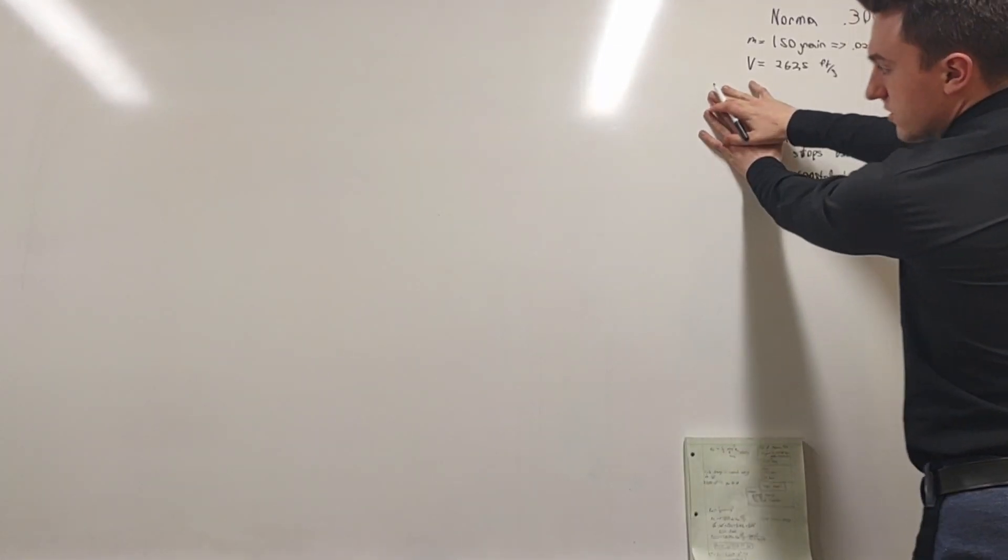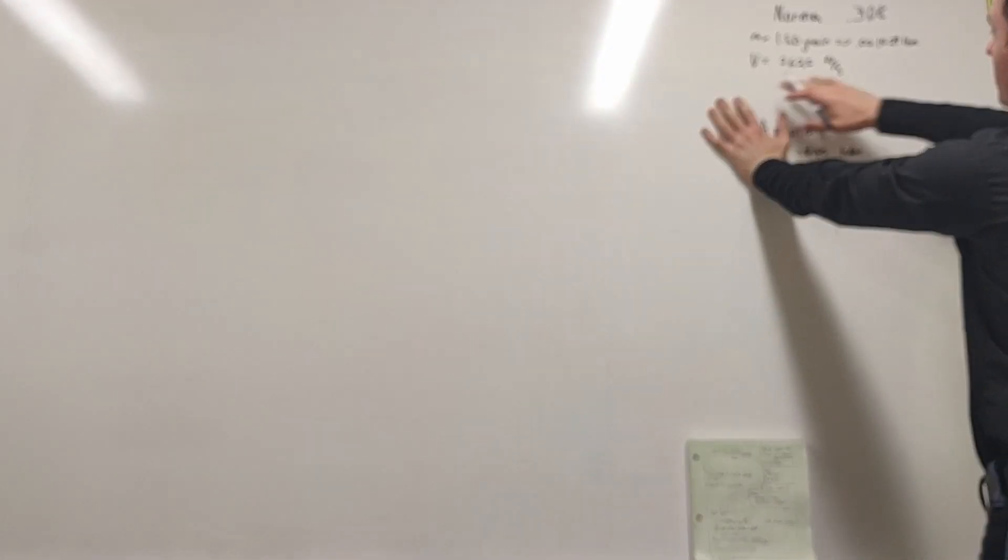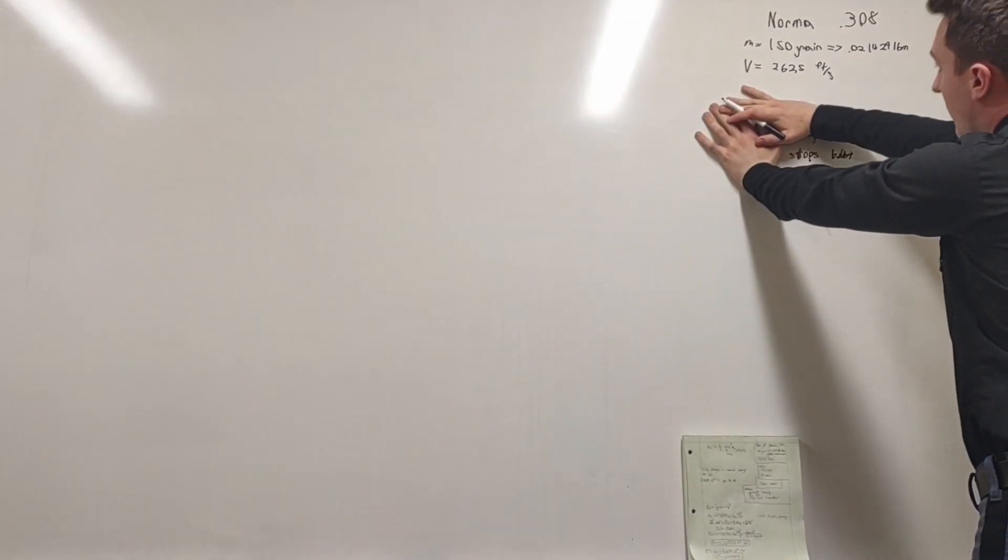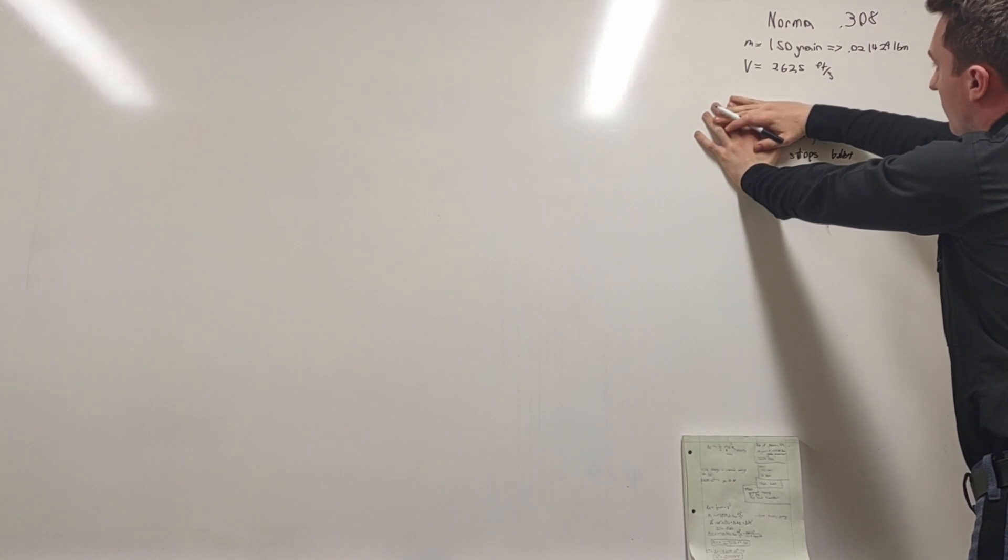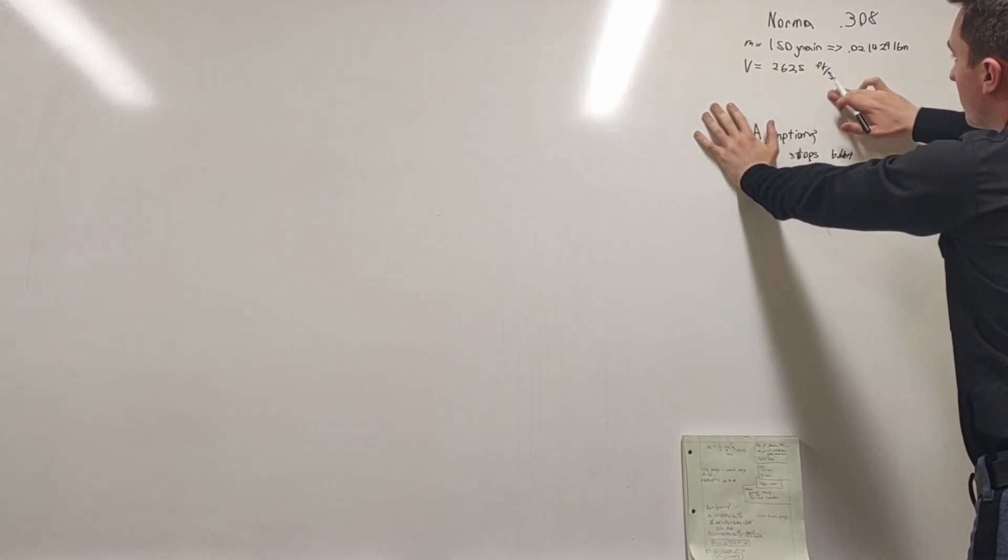So we have all this stuff. This is what we have, this is what we're going to use for the equation. We have the mass, the actual weight, and we have the velocity of the bullet. Very simple.